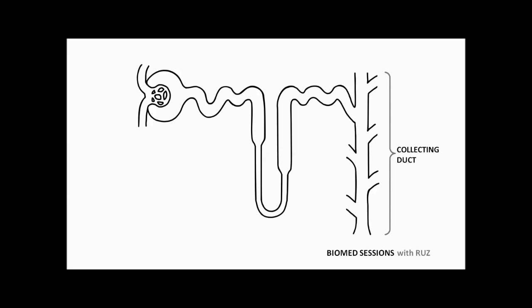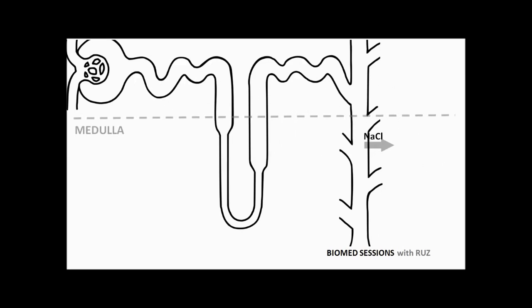The collecting duct, which is composed of principal and intercalated cells, is where the final adjustments take place before the filtrate leaves as urine. Here, sodium chloride is reabsorbed in addition to urea, although sometimes urea can reenter the tubule at the loop of Henle, in a process known as urea recycling. But what about water? Levels of water in the collecting duct are regulated by the hormone ADH, which acts to retain water in the body, by enabling it to be reabsorbed back into the blood.